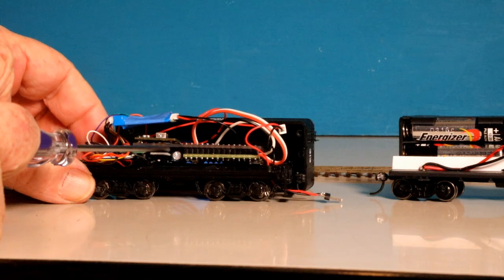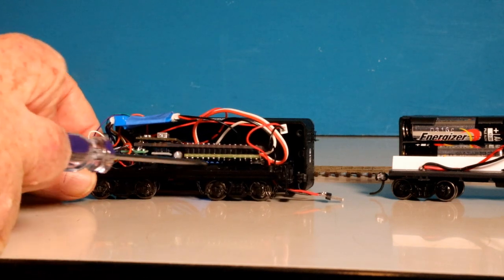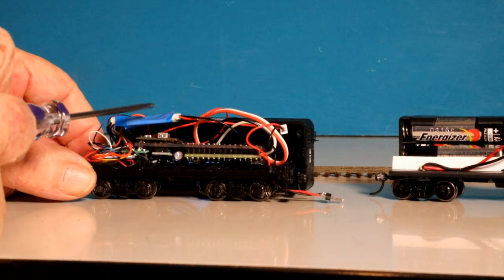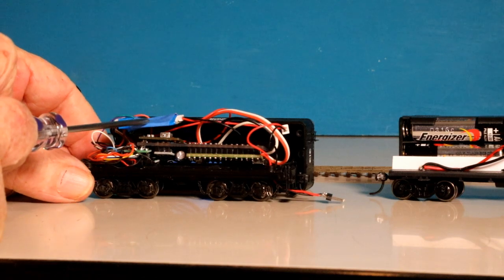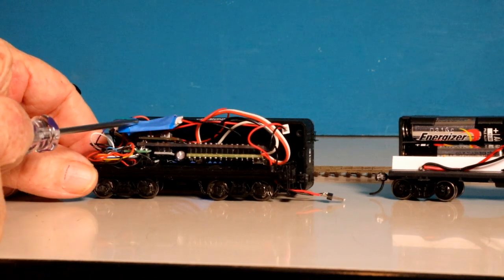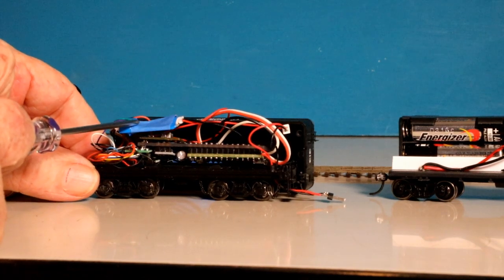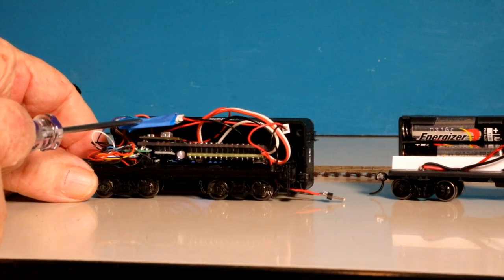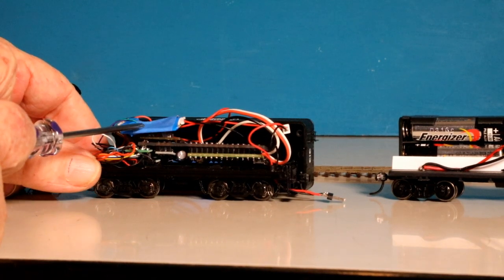So there's actually only two connections to the SOCS module. The power for 12 volts and the rail connection to the DCC decoder. The control is all coming in through WiFi. There's no wired connection for that.